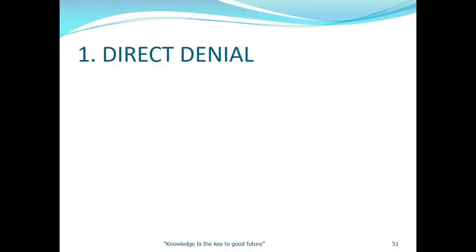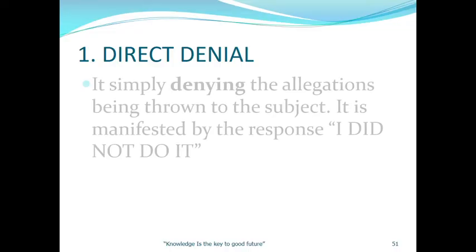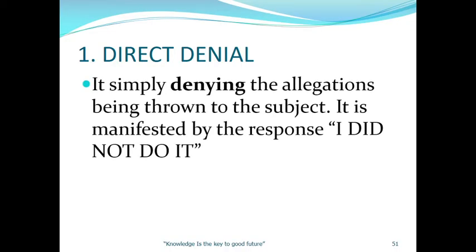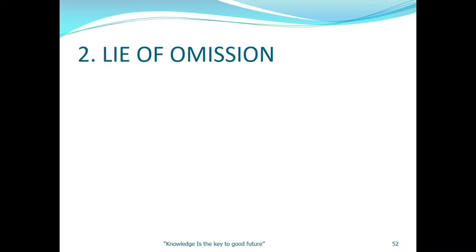We have kinds of lies. Number one is direct denial: simply denying the allegation being thrown at the subject. It is manifested by responses such as 'I did not do it' or 'I did not do that.' For example, if asked 'Did you kill someone?' the response 'No, I did not kill anyone' is a direct denial — you are throwing the allegation back.